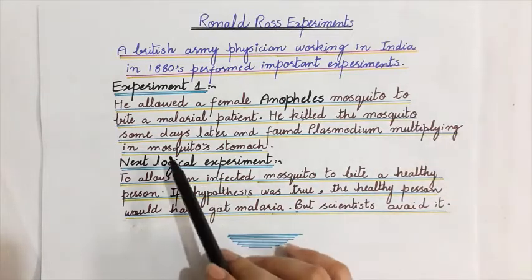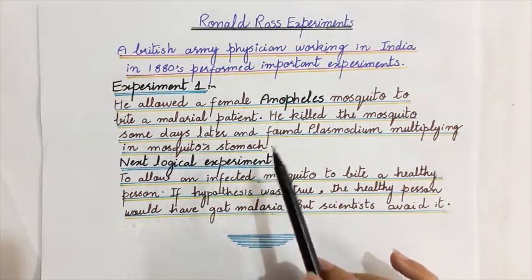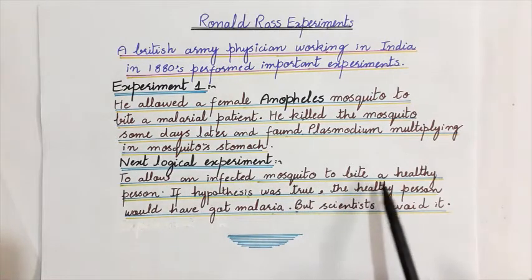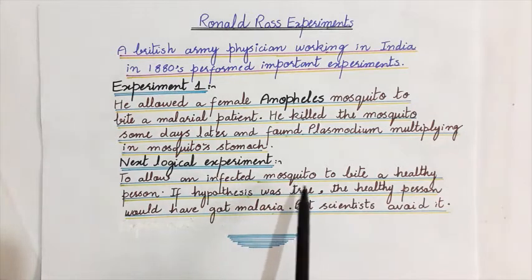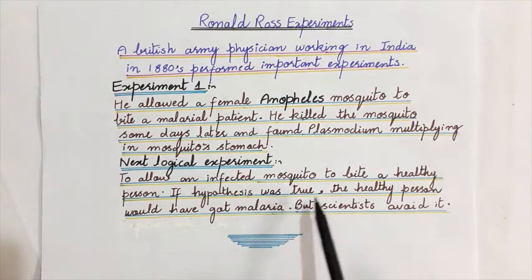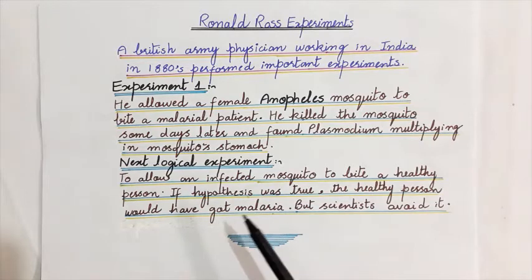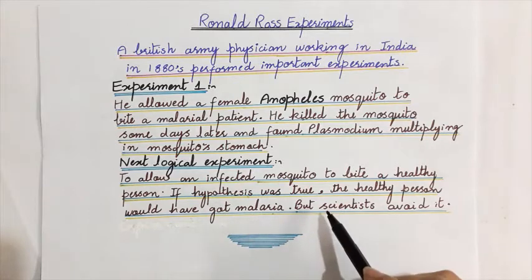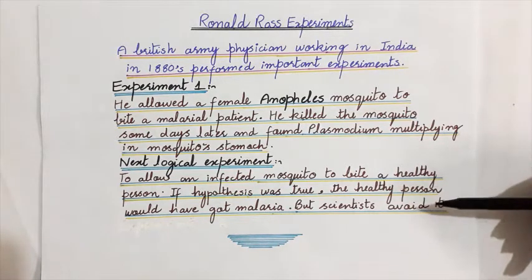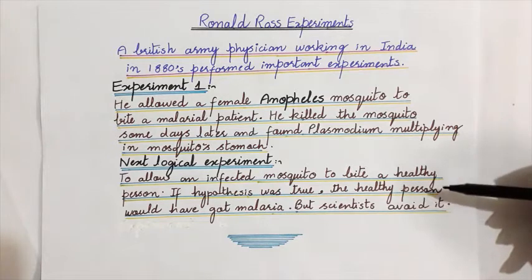The next logical experiment was to allow an infected mosquito to bite a healthy person. If the hypothesis was true, the healthy person would have got malaria. However, the scientist avoided this because the results could be serious. So Ronald Ross re-designed his experiment.